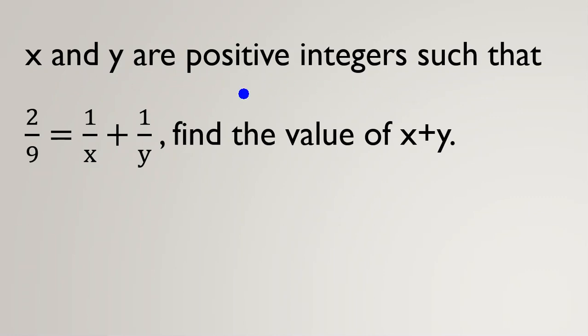When we have positive integers and fractions, the most useful way to start solving the problem is to multiply by the denominators to get rid of these denominators 9, x, and y.